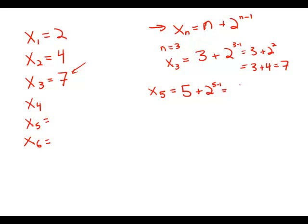That is 5 plus 2 to the 4th. Well, 2 times 2 times 2 times 2 is 16. So that means we get 5 plus 16 is 21.